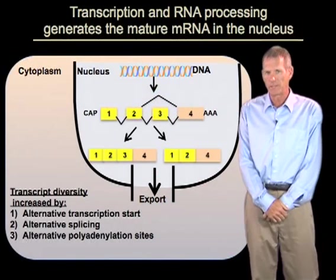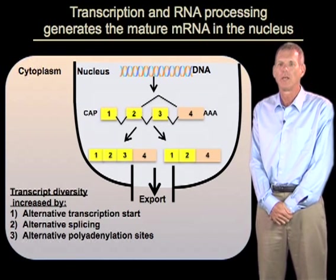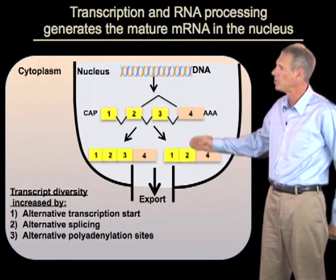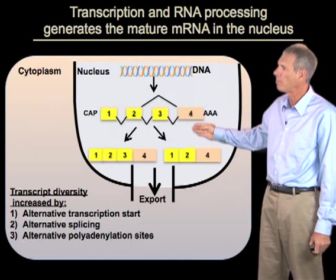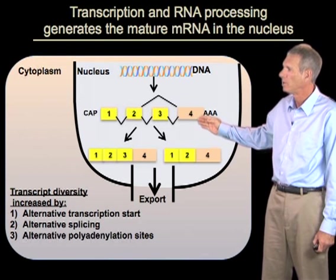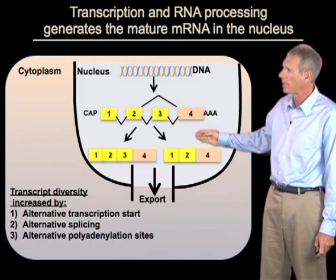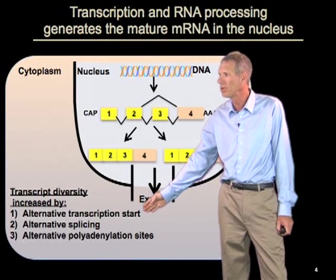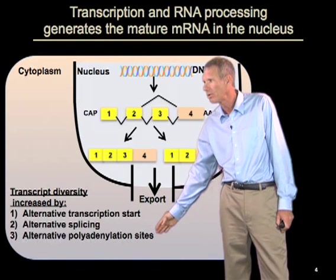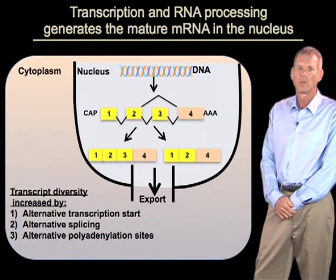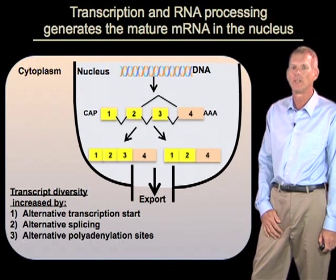Before beginning my talk about the basic mechanisms of translation, localization, and degradation, I want to say a few words about how mRNAs are produced in eukaryotic cells. mRNAs are produced in the nucleus by transcription, followed by RNA processing, which includes splicing and addition of a 3' poly-A tail. One of the interesting features about eukaryotic mRNAs is that there can be a wide diversity of events which alter the form of the mRNA — alternative transcription starts, alternative splicing, or alternative polyadenylation. This leads to a wide diversity of transcripts being produced from a single gene, which can influence the nature of the proteins produced, as well as features of the mRNA which control its localization, translation, and degradation.